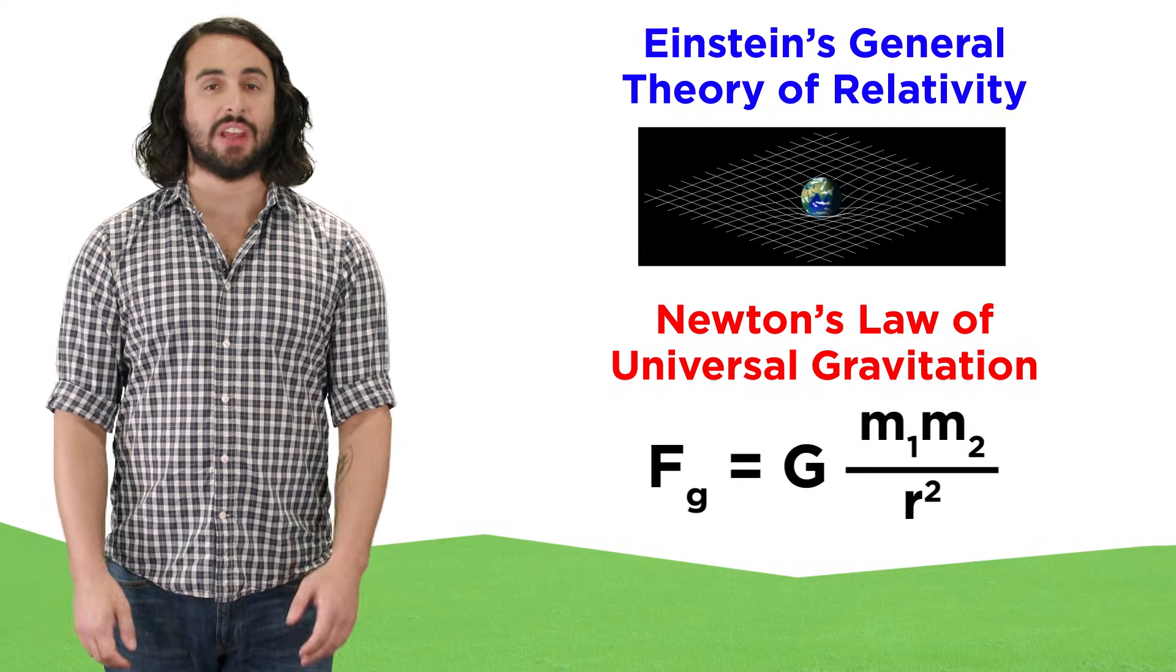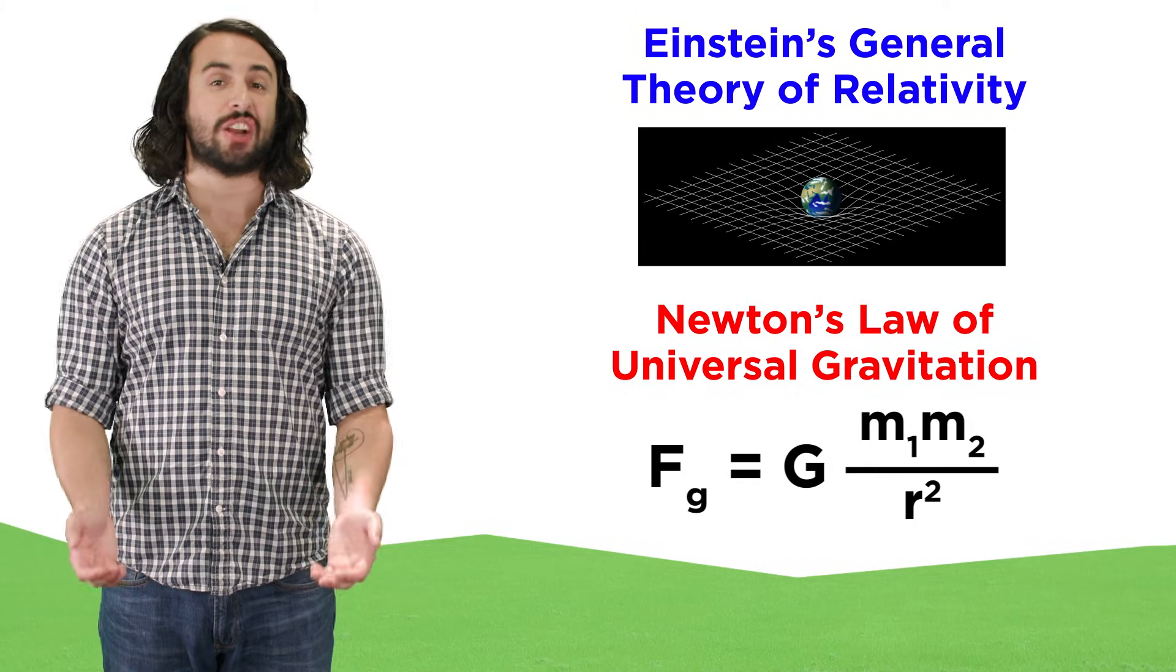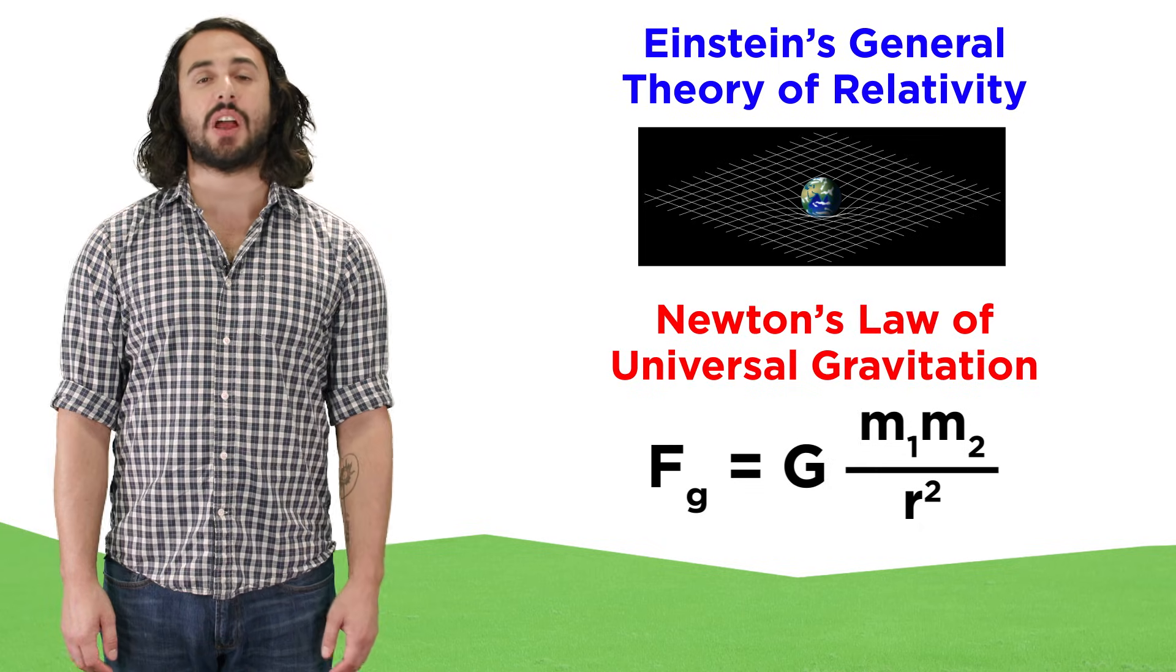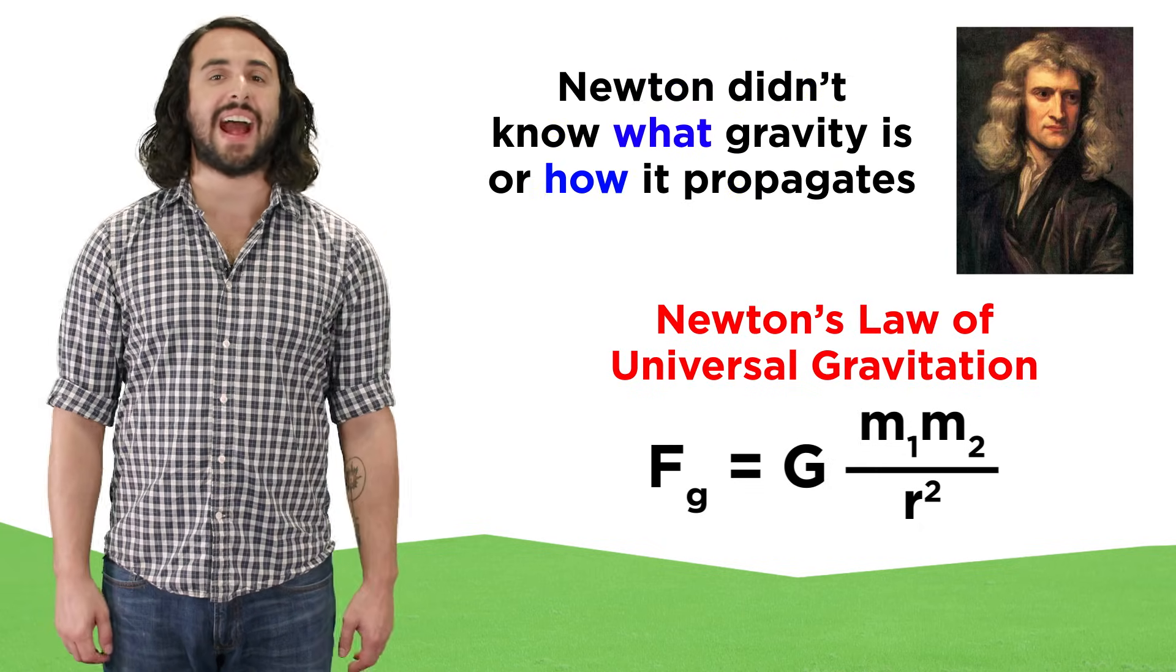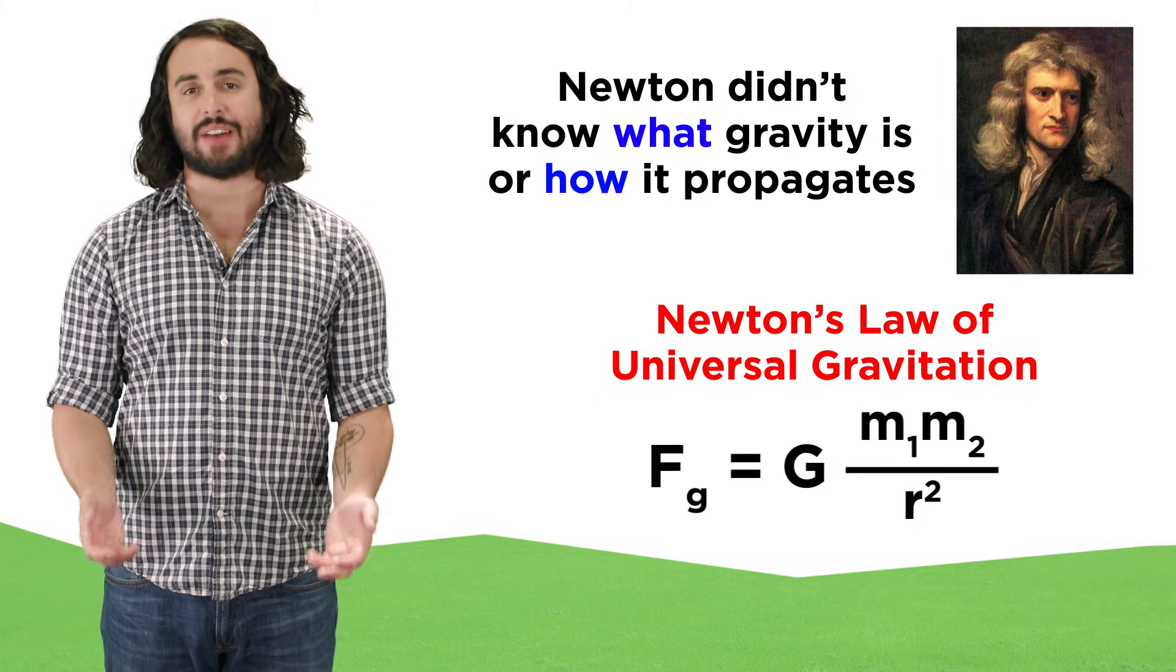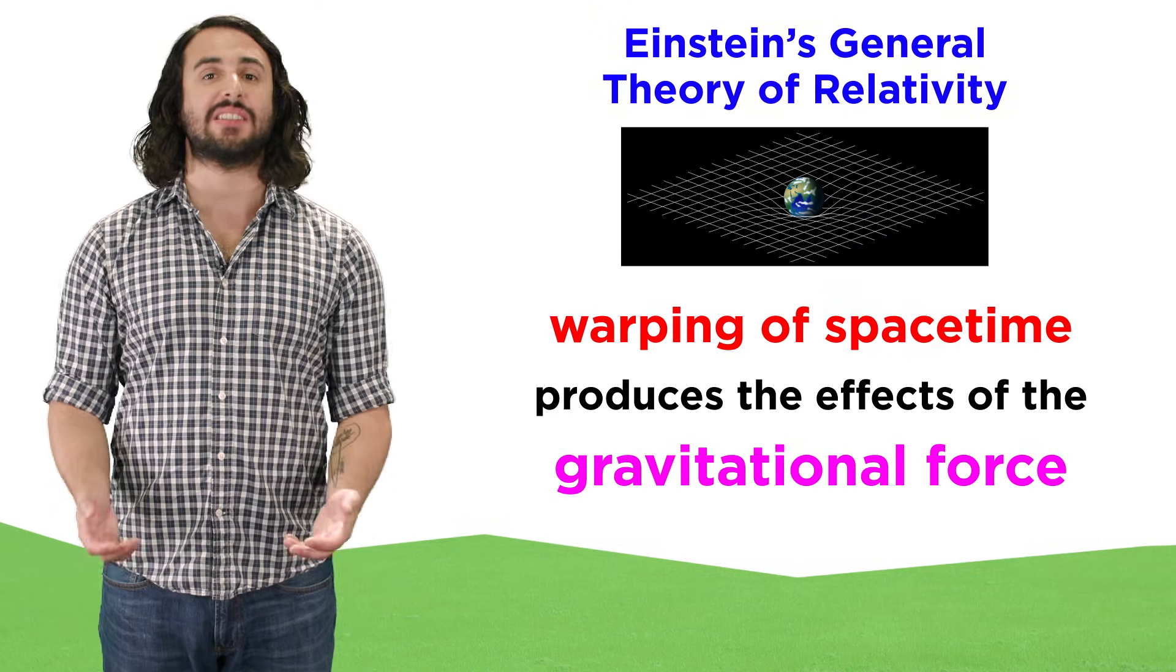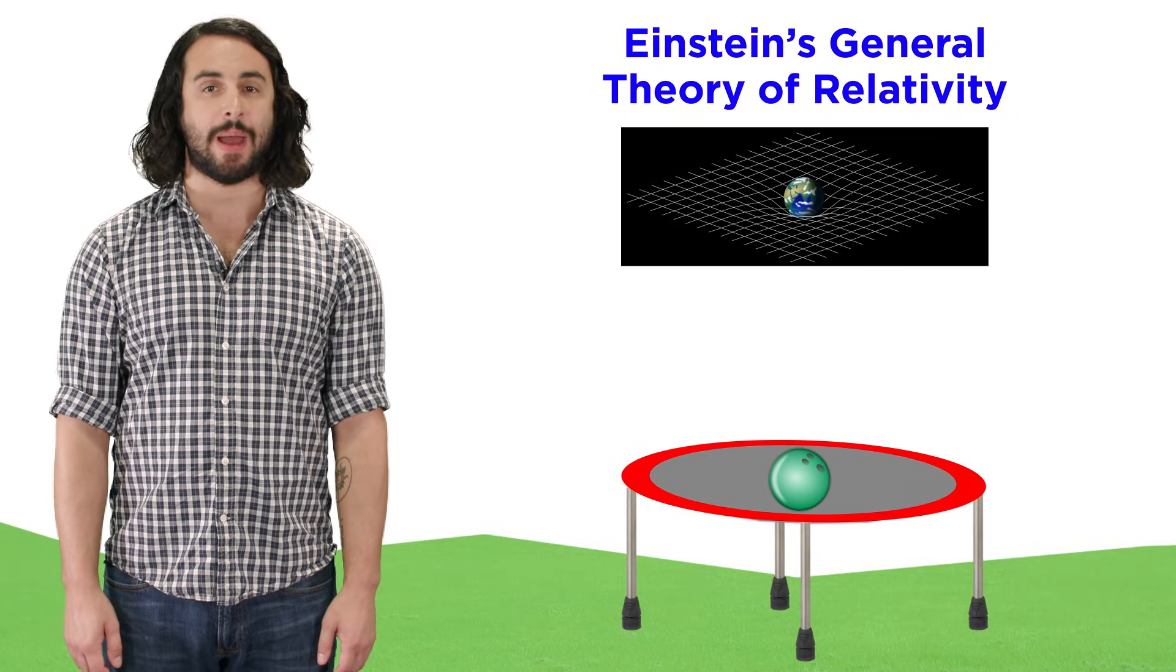Because we now understand that space is warped around massive objects, we see that general relativity is a big improvement on Newton's law of universal gravitation in terms of a satisfactory theory of gravity. Newton outlined aspects of the gravitational force, but he didn't know exactly what gravity is or how it propagates. Now we can regard it as the warping of space that deflects the path of other objects, like a bowling ball pressing down on a membrane.